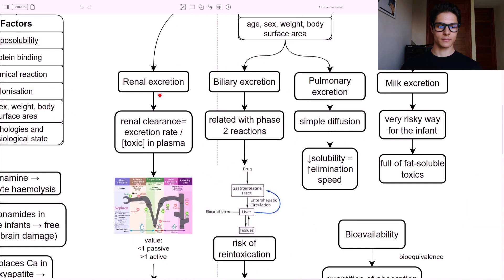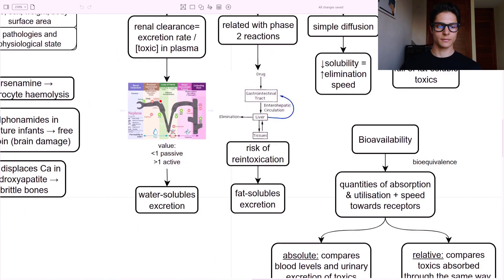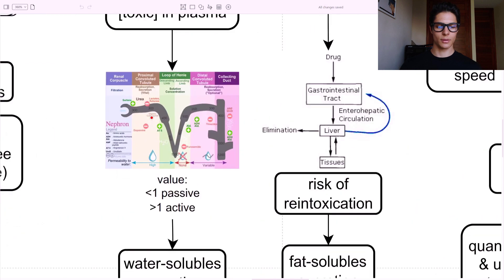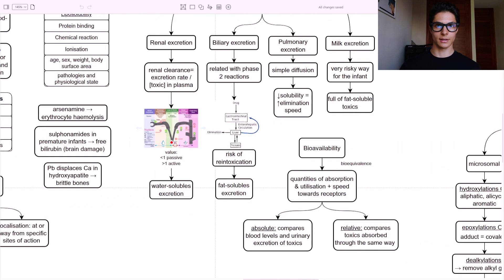Renal excretion - we have the renal clearance, which equals the excretion rate divided by the concentration of the toxicant in the plasma. We have the different parts of the nephron where we can get rid of many toxins together with also minerals and other drugs. When the clearance value is below one, it is a passive clearance. When it's over one, it's an active clearance. Water-soluble excretion only in the kidneys.